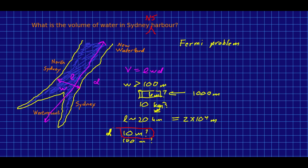And so now I'm ready to do my estimation. I can just say that my volume is about 10 metres times 10 to the 3 metres times 2 times 10 to the 4 metres. And so that's 10 to the 1, 4, 8... 2 times 10 to the 8 metres cubed is my estimate for the volume of water in Sydney Harbour.